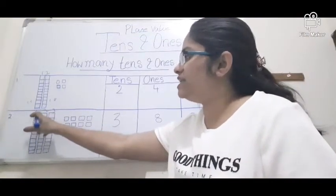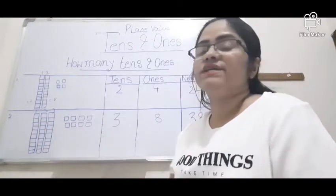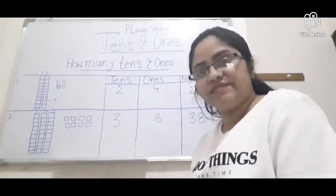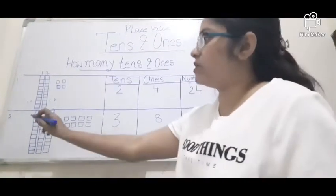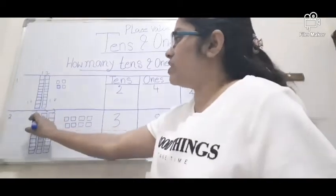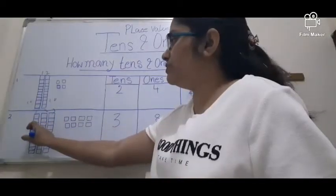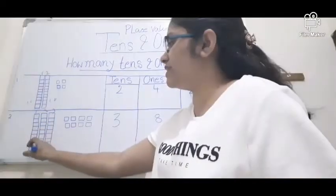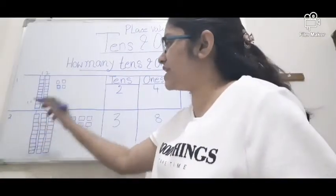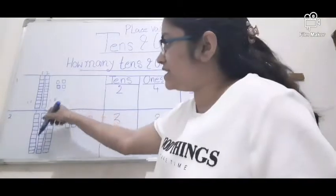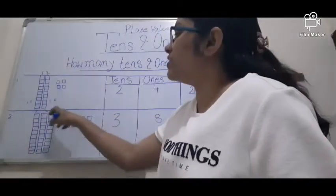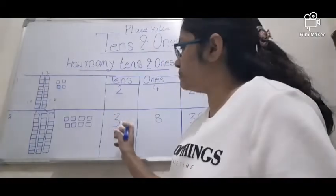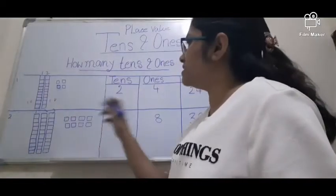In each row there are 10 blocks. If you count: 1, 2, 3, 4, 5, 6, 7, 8, 9, 10. Again here 10, again here 10. So 3 tens together will be 30.